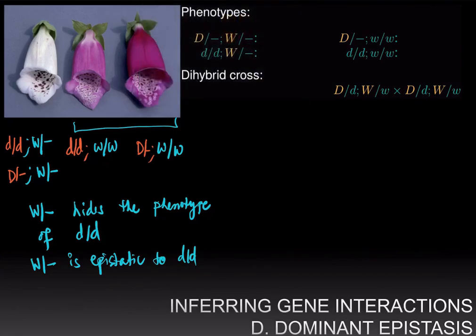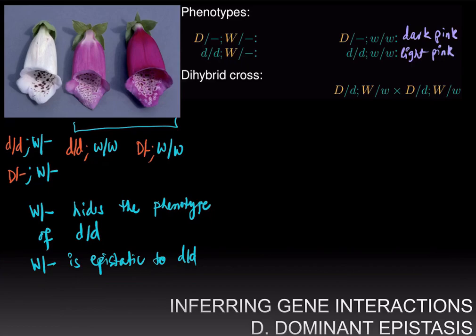Filling in the phenotypes: if you are homozygous little w over little w, you have color everywhere — with at least one dominant D allele you are dark pink, whereas if you are homozygous little d over little d you are light pink. If you have even one dominant allele of W, you are always white no matter what allele of the D gene you have, because W is epistatic to D and restricts all pigmentation to the spots.